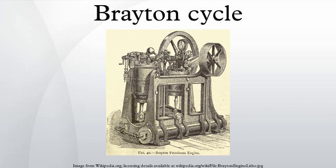As the fuel/air mixture entered the expansion cylinder, it was ignited by a pilot flame. A screen was used to prevent the fire from returning to the reservoir. In early versions of the engine, this screen sometimes failed and an explosion would occur, but in 1874 Brayton solved the explosion problem by adding the fuel just prior to the expander cylinder. The engine now used heavier fuels such as kerosene and fuel oil.